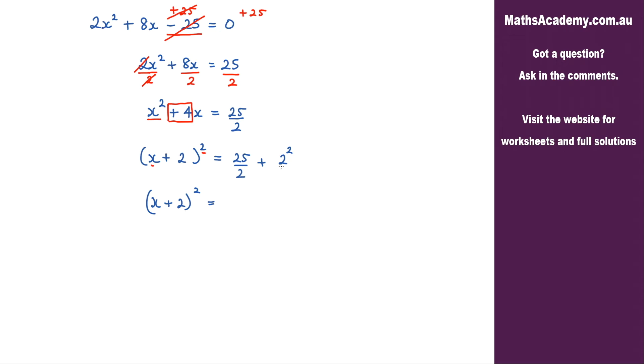We've got 25 over 2 and we've got 4 here. So this bit here, that's 4, and I can write 4 as 8 over 2. So what I've got is 25/2 + 8/2, and that simplifies to 33/2. So I've got (x + 2)² = 33/2.